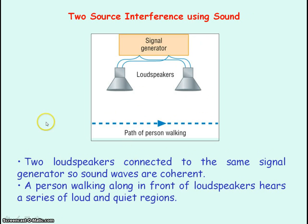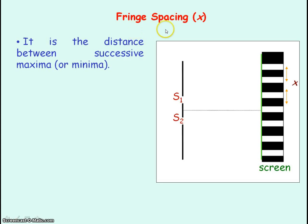To obtain two-source interference using sound, you can connect two loudspeakers to a signal generator, so the sound waves emitted will be coherent. A person walking along in front of the loudspeakers will hear regions where the sound is loud and then regions where it is quiet, representing our maxima and minima from constructive and destructive interference between the sound waves.